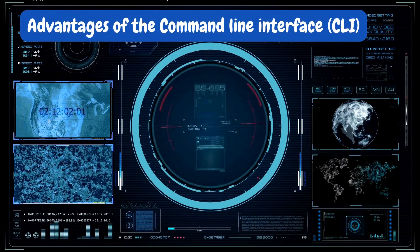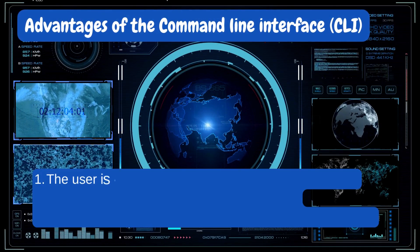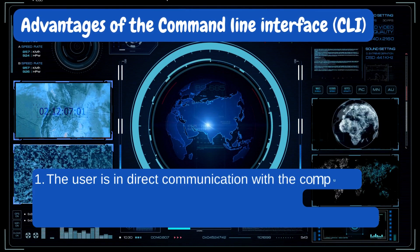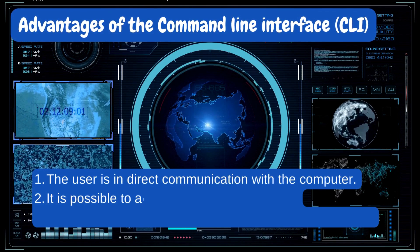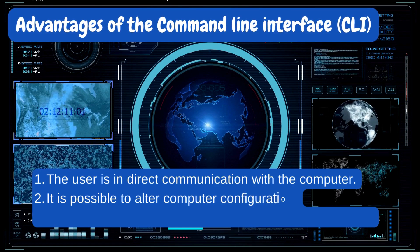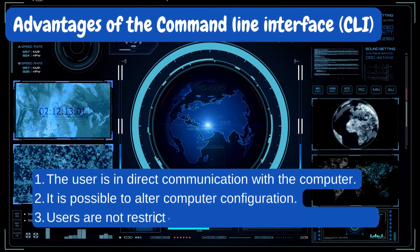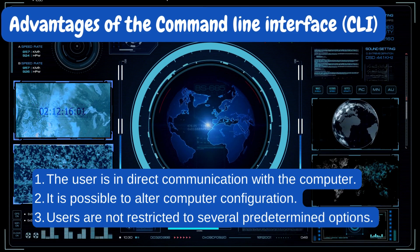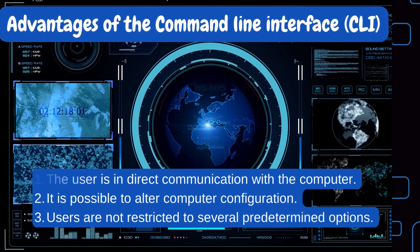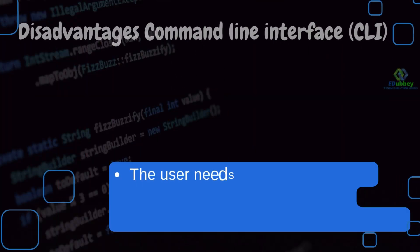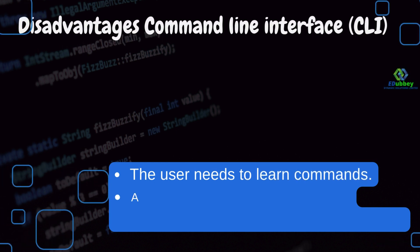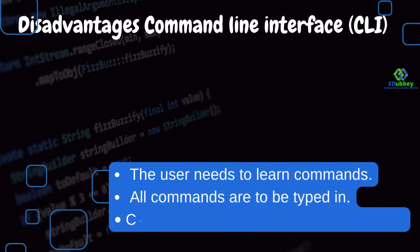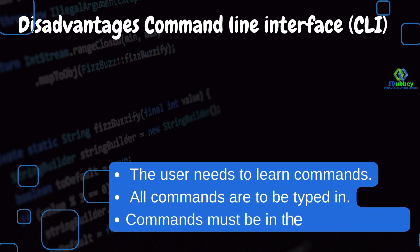The advantages of CLI are: 1. The user is in direct communication with the computer. 2. It is possible to alter computer configuration. 3. Users are not restricted to several predetermined options. The disadvantages of CLI are: 1. The user needs to learn commands. 2. All commands are to be typed in. 3. Commands must be in the correct format.